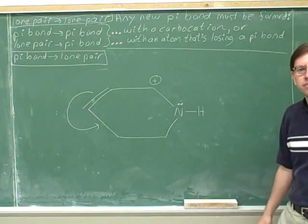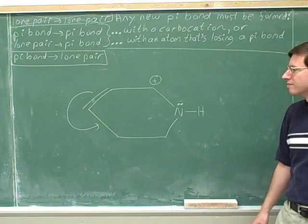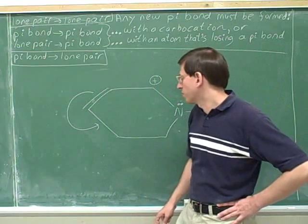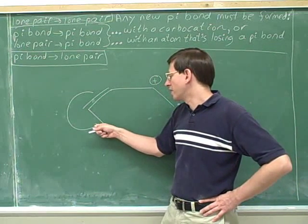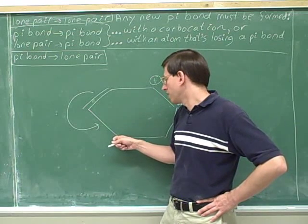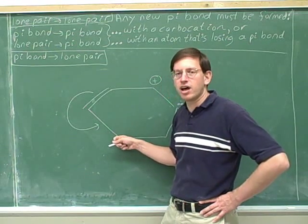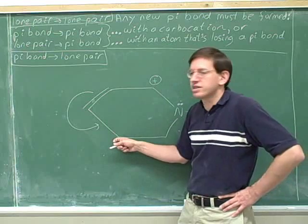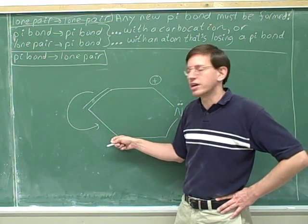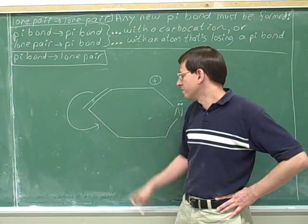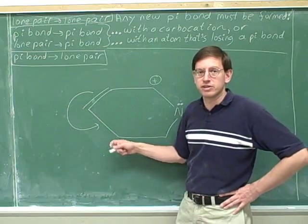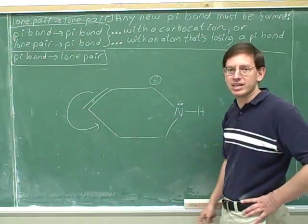Would this arrow work? This arrow doesn't work for the same reason as the previous one. We're forming a new pi bond, but this is not a carbocation. The only way we could make room on this atom for a new pi bond is if it lost a pi bond, but this carbon doesn't have any pi bonds to lose. It also just wasn't a candidate for resonance in the first place. So this arrow is bad.